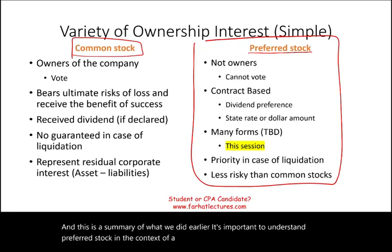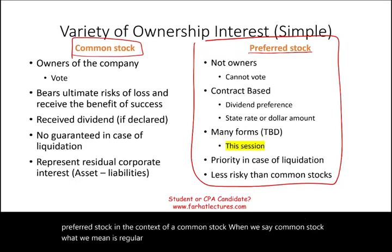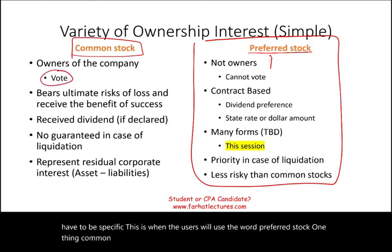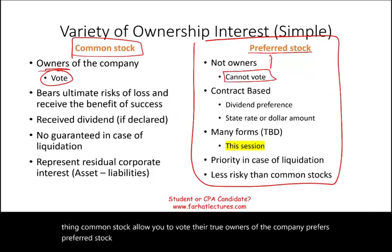When we say common stock, we mean regular stock. When it's not common stock, we use the word preferred stock. One thing common stock allows you to do is vote — they are the true owners of the company. Preferred stock cannot vote, so they're not really true owners of the company. That's important to know.